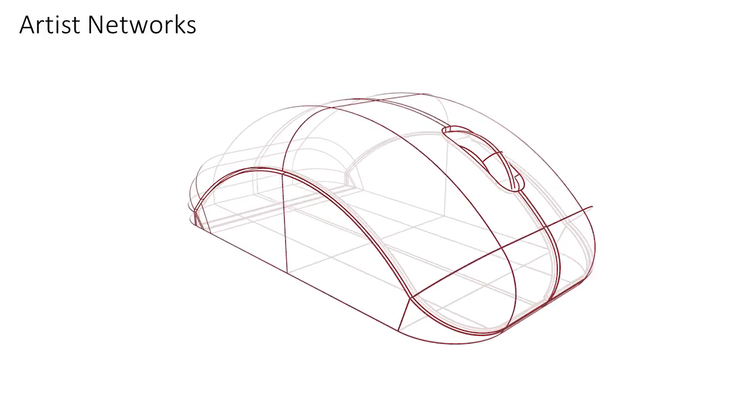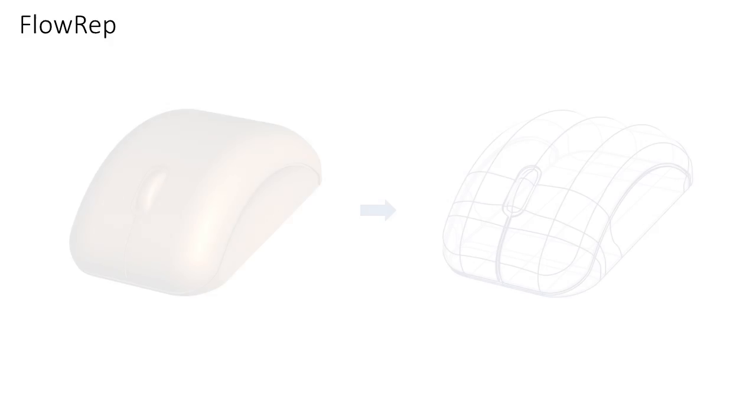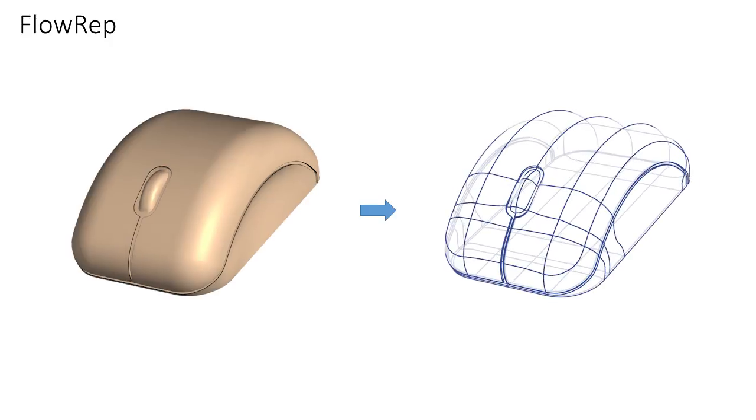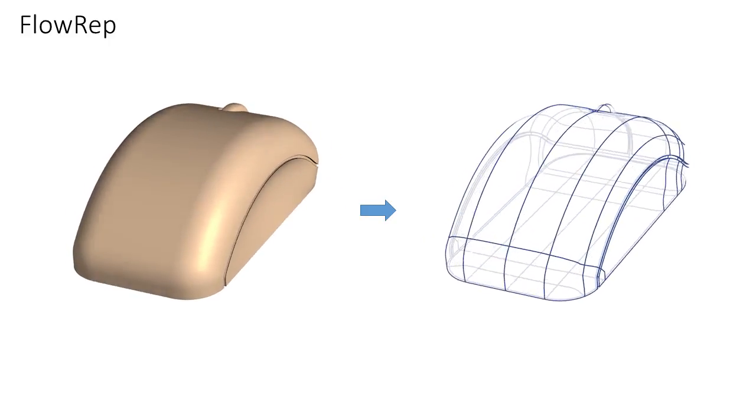Artists create descriptive curved networks to depict complex shapes in 3D space or 2D media. We present FlowRep, an algorithm for extracting similarly descriptive compact 3D curved networks from freeform shapes.